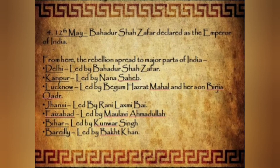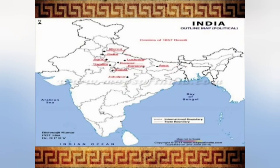The revolt spread over the entire area from the neighborhood of Patna to the borders of Rajasthan. There were six main centers of revolt in this region: Kanpur, Lucknow, Bareilly, Jhansi, Gwalior, and Arrah in Bihar.